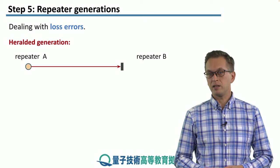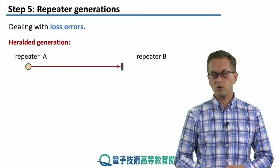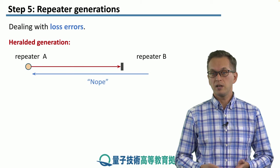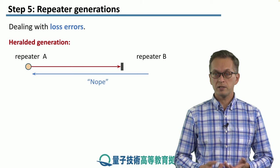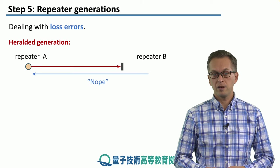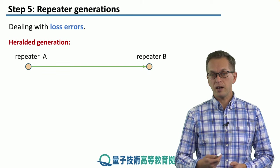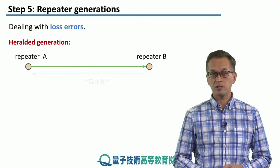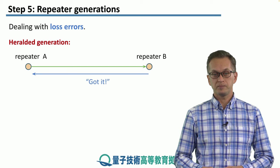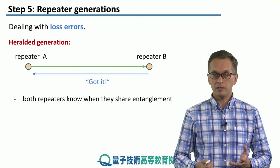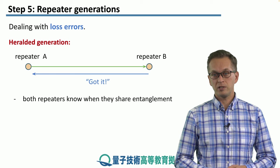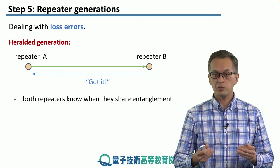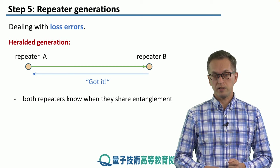So repeater A has to try again. Repeater A tries again, but the photon gets absorbed, or doesn't get collected, or even doesn't get detected. So repeater B says it didn't get anything, and repeater A has to try again until finally it succeeds. Then repeater B acknowledges: yes, I got it. The advantage of heralded generation of entanglement is that both A and B know for sure when they are sharing an entangled state.